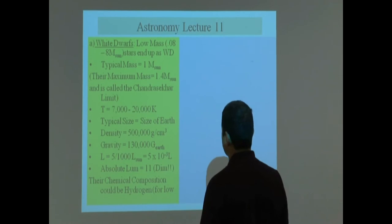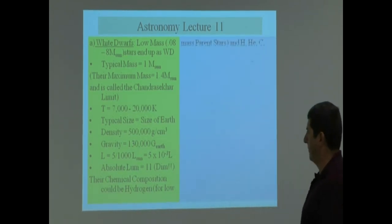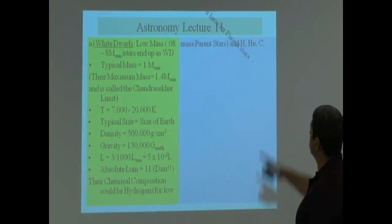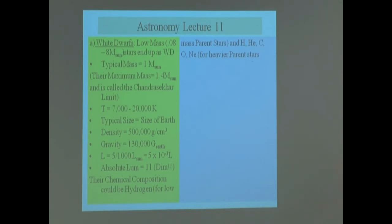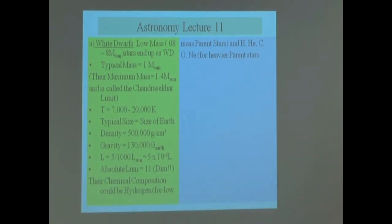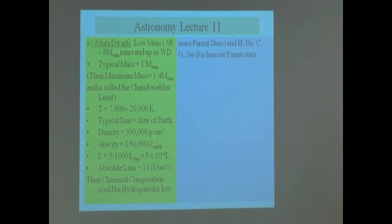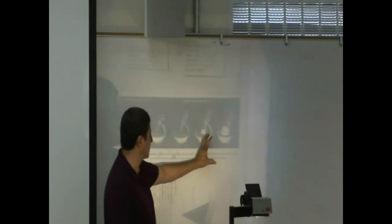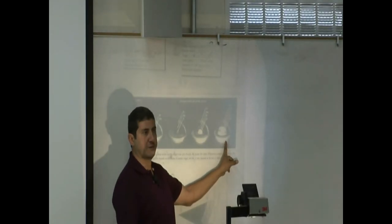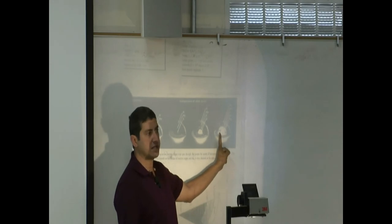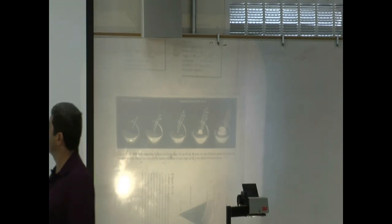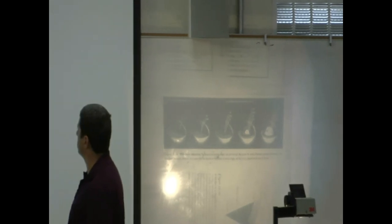The chemical composition could be hydrogen for low mass parent stars. But as the parent star gets heavier, more complex, the white dwarf it ends up as could be hydrogen, helium, carbon, oxygen, neon for heavier parent stars.